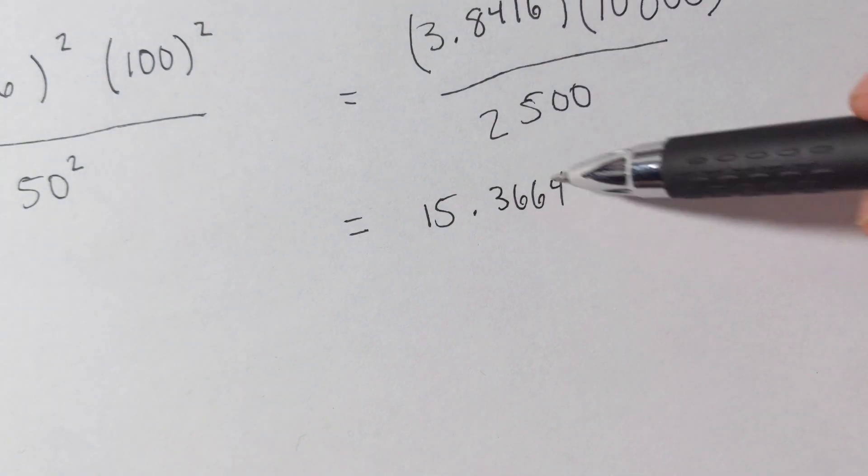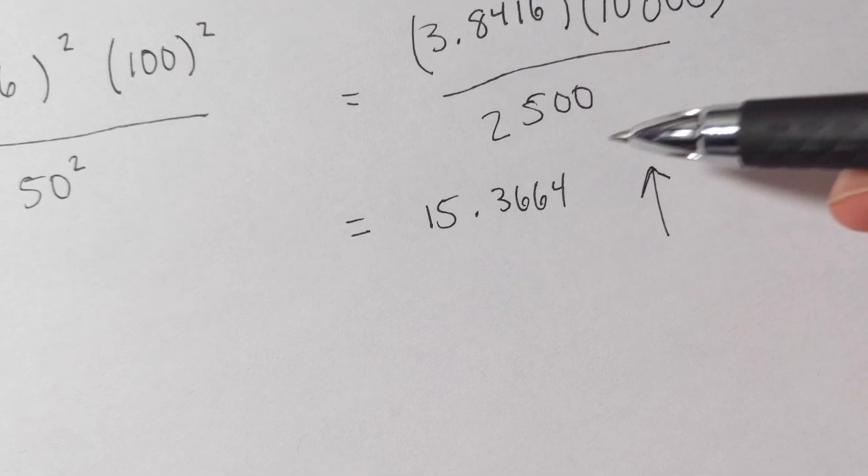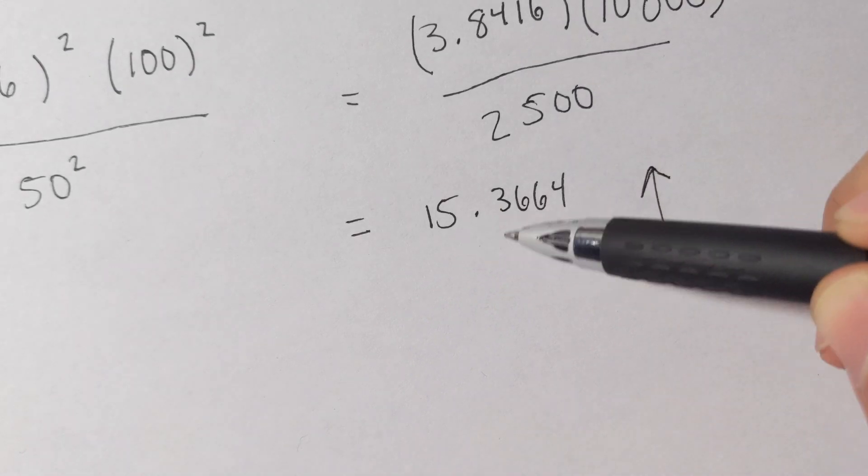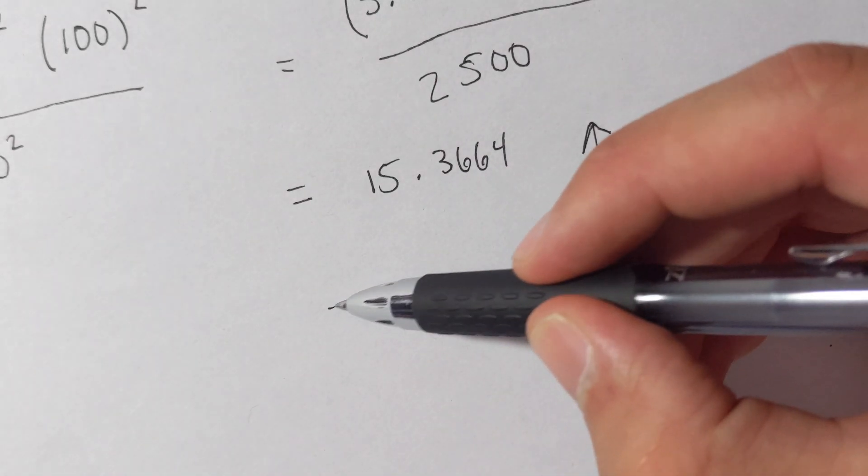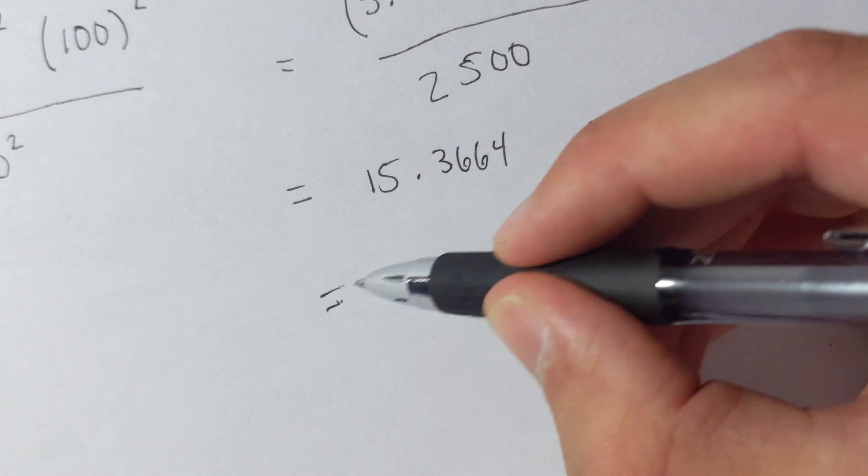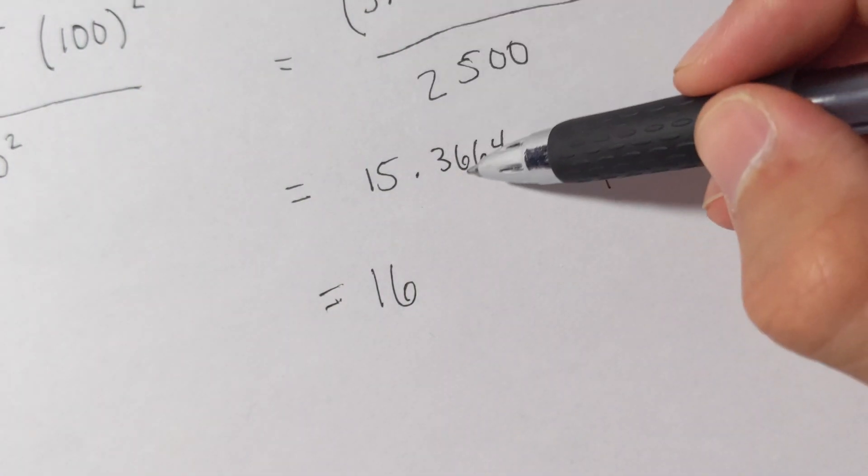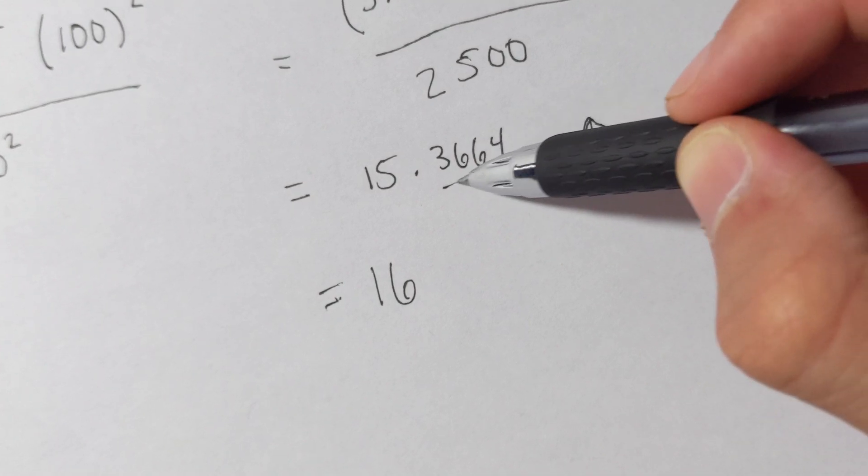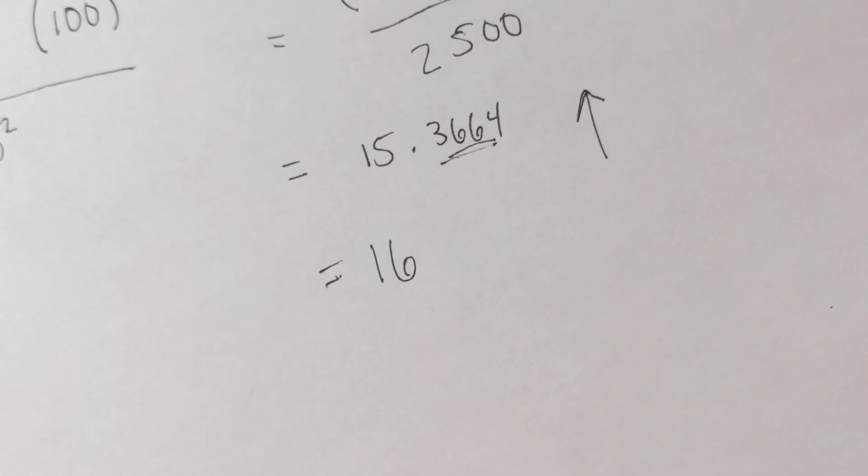Now with these problems, with the necessary sample size, we always have to round up. Why? Because if we're surveying 15 people, that's not going to be accurate enough. But the only other thing to do is to survey 16 people, because you have to get at least this 0.3664 of a person. And obviously that's not a full person, so you just round up to the next person. Let's see another example.